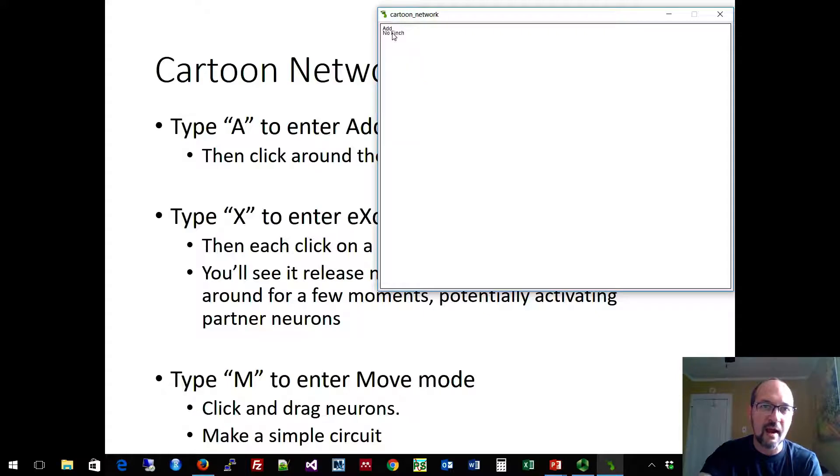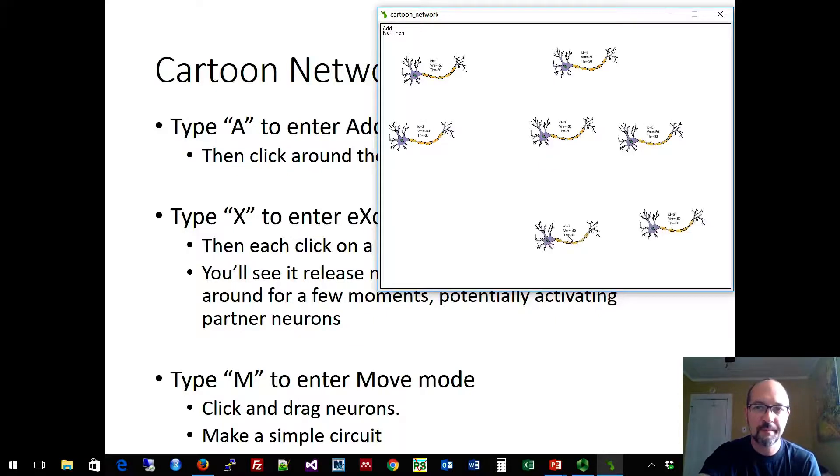So, for example, let's go to add mode. And now that we're in add mode, and the simulator tells us up here on the left that we're in add mode, every mouse click adds a neuron. Go back and open the menu by clicking add.